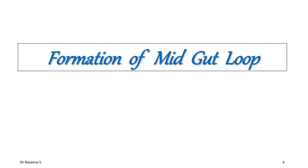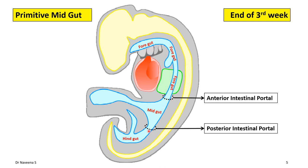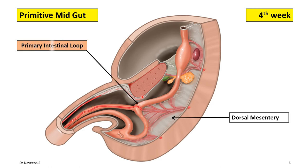Let us begin with the formation of the midgut loop. The primitive midgut is a part of the primitive gut tube that extends between the anterior and posterior intestinal portals. Ventrally, it is connected to the yolk sac through the vitello-intestinal duct. The primitive midgut is suspended dorsally by the dorsal mesentery. At the beginning of the 4th week, it shows a ventral U-shaped loop in the median plane, known as the primary intestinal loop, with an apex ventrally and a base dorsally.